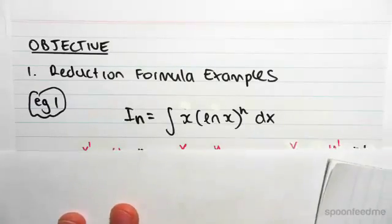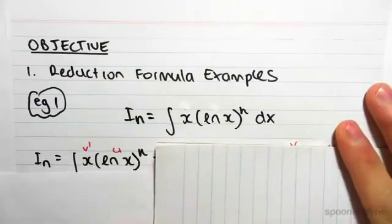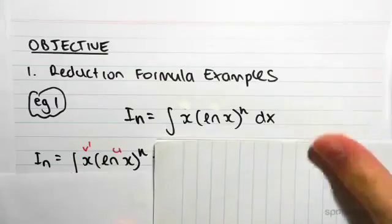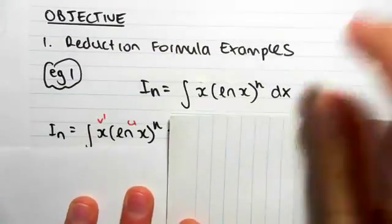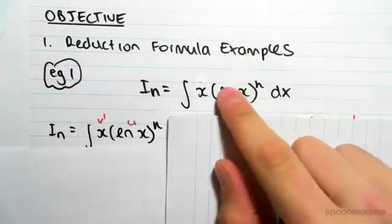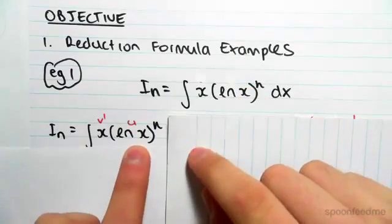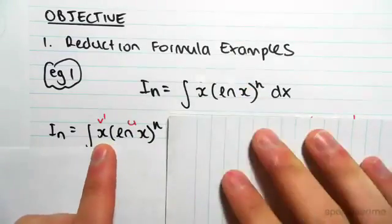So the first thing we need to do is work out what our v' and u terms are going to be. So as I said in the previous video, we always make u equal to the term with the n, so u is going to be (ln x)^n and v' is going to be x.